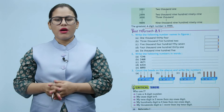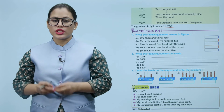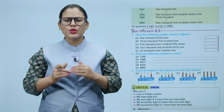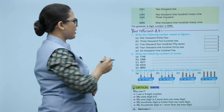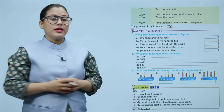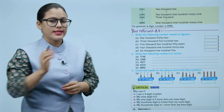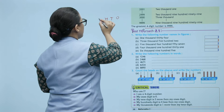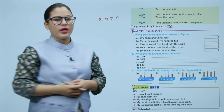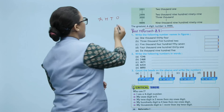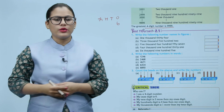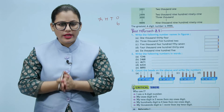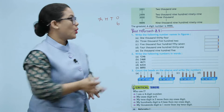Critical thinker — who am I? I am a four digit number. My ones digit is six. Let's do it step by step. This is a four digit number. Ones, tens, hundred, thousand — yeh four digit number hai. Ones digit hai six. My tens digit is two more than my ones digit.